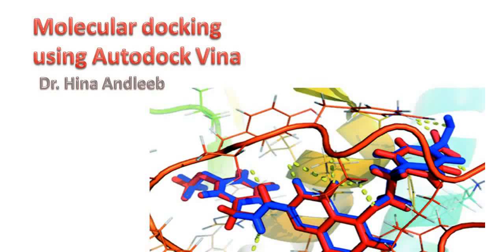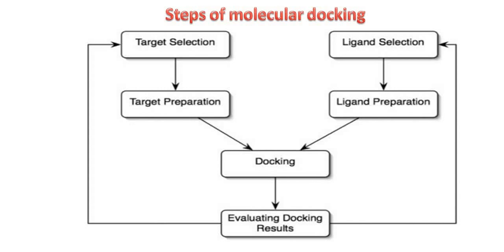Before performing AutoDock Vina, we should know the steps for molecular docking. The steps of molecular docking are: target selection and ligand selection. First of all, you need to select your target protein or nucleic acid, whatever is required, and the ligand. Your ligand can also be a chemical compound, an inhibitor, or a protein.